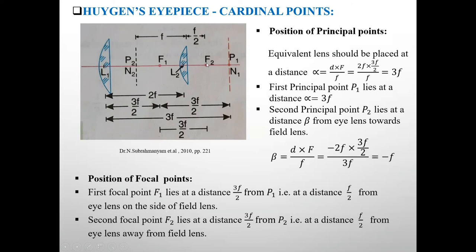Second focal point F2 lies at distance 3F by 2 from P2. That is at a distance F by 2 from eye lens away from field lens.